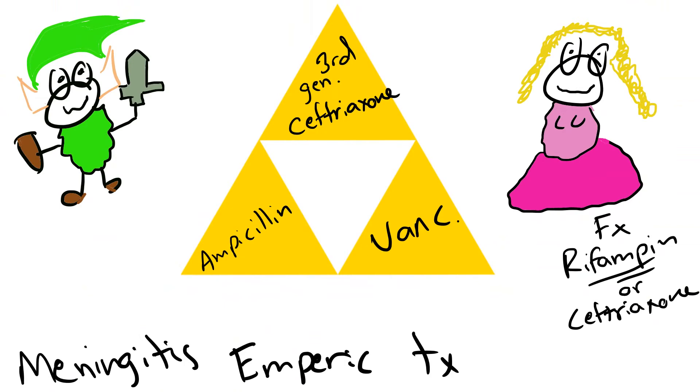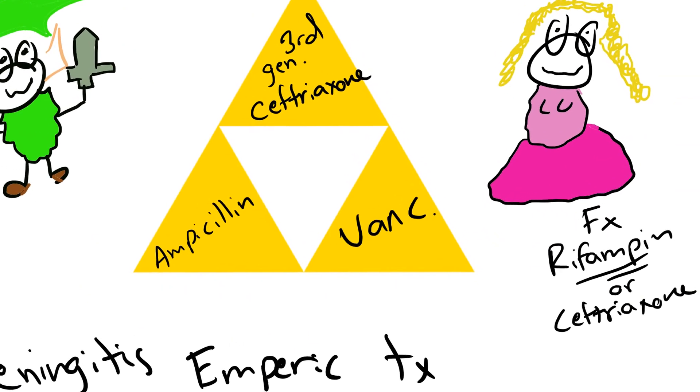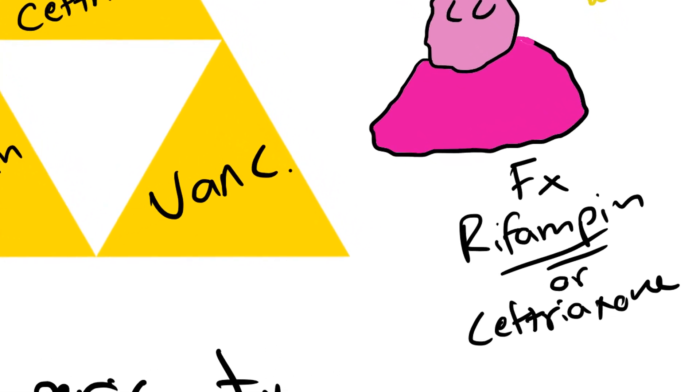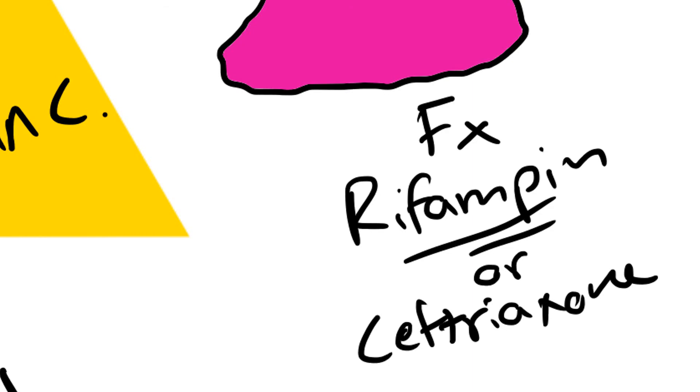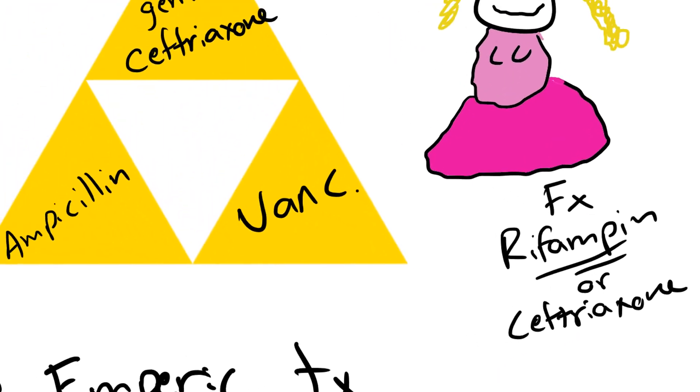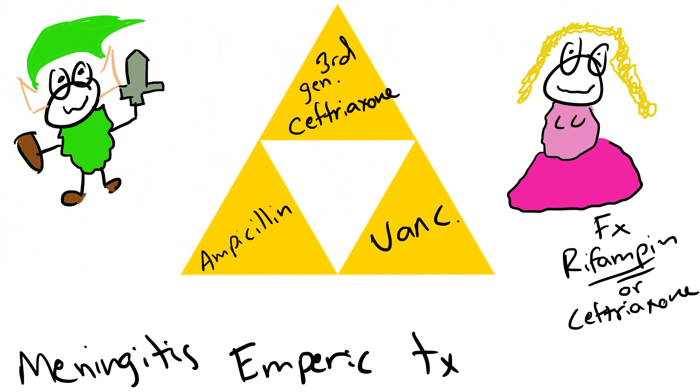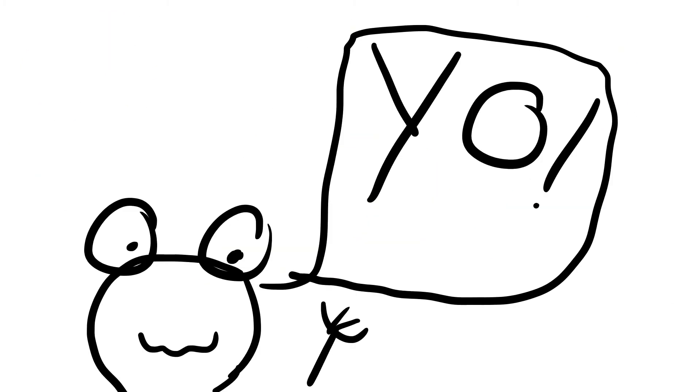And just remember for the exam, all close contacts to the patient, like their family members, must receive prophylactic treatment of rifampin or ceftriaxone. It's usually going to be rifampin for the exams, but if you have to give ceftriaxone, it's just one dose of intramuscular ceftriaxone. And just continue the analgesics and supportive therapy to reduce their fevers.